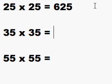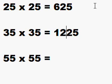Let's do the next one. 35 times 35. Again we start off with 25, and in front of the 25 we need to put down the number that we need, which is 3 times the number that comes after the 3, which is a 4. 3 times 4 is 12, and so 35 times 35 is 1225.